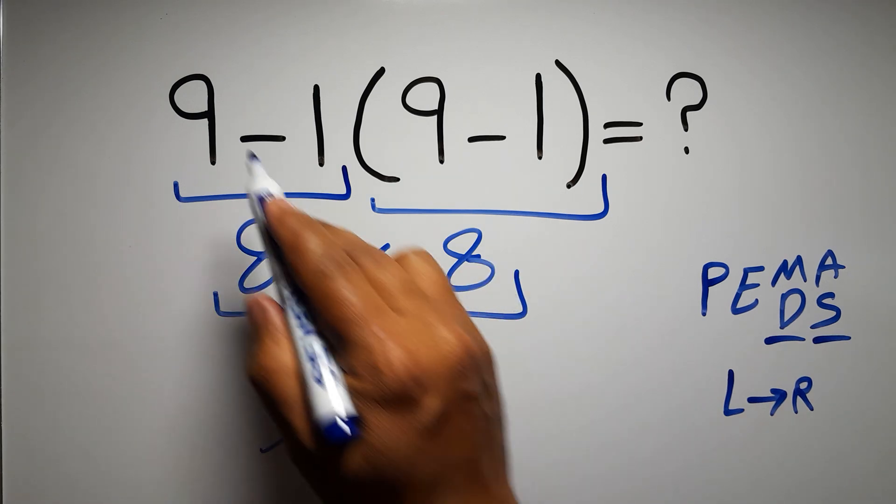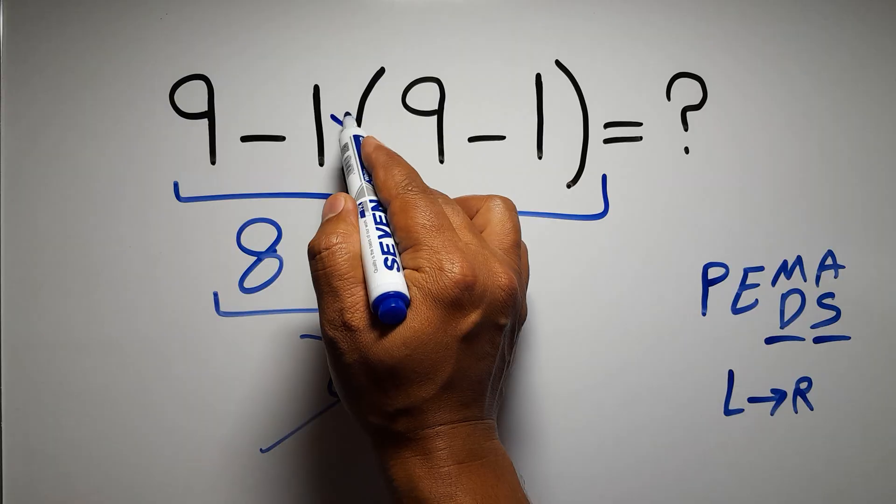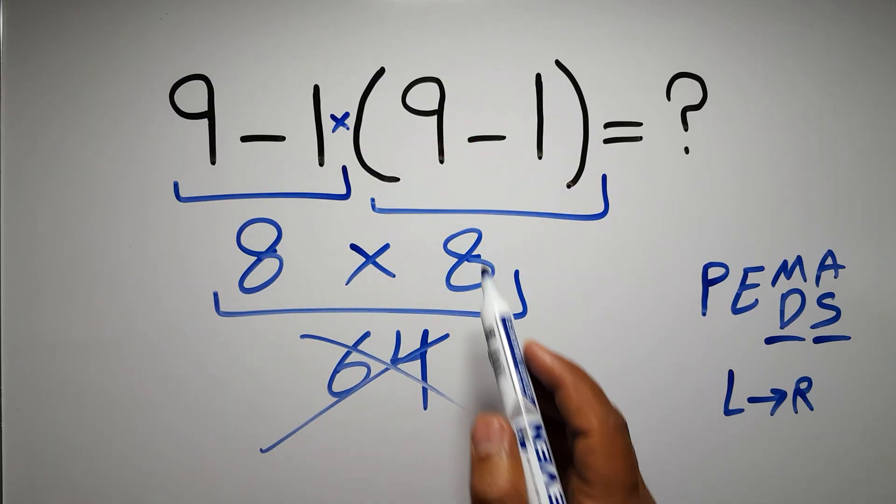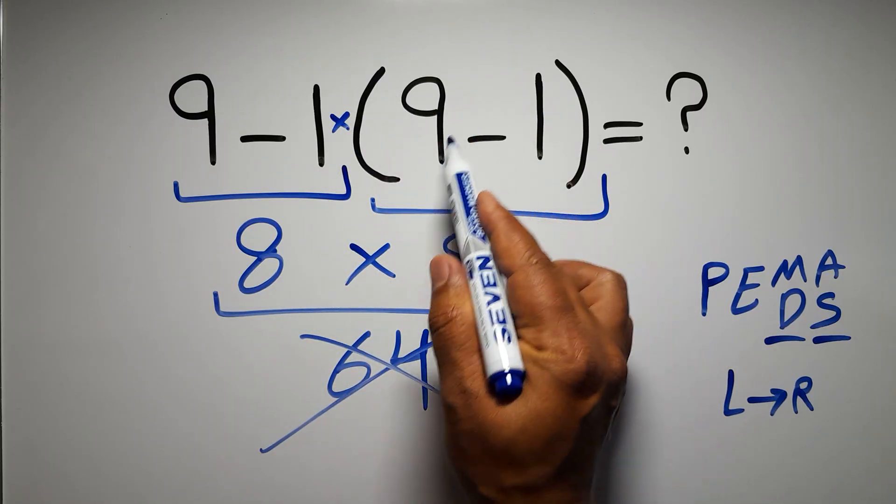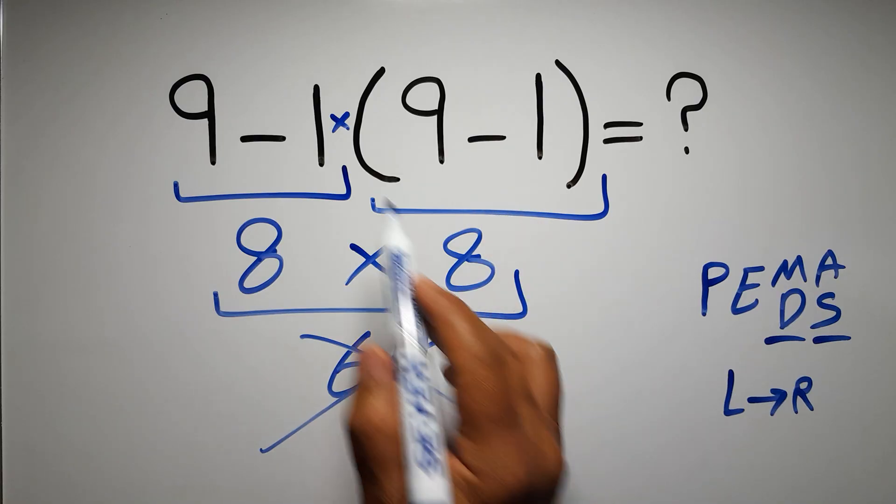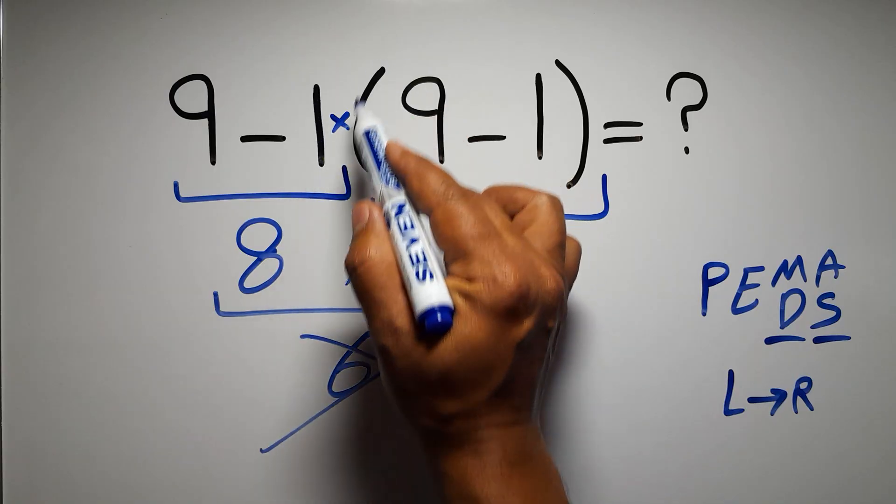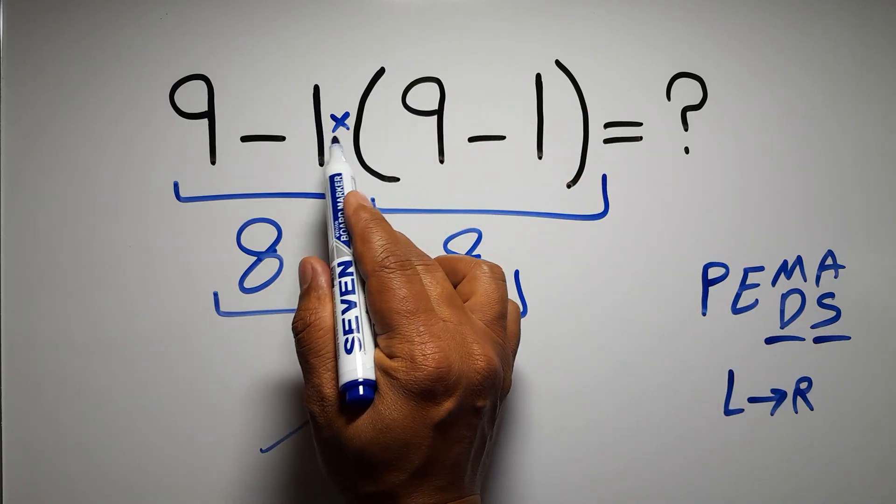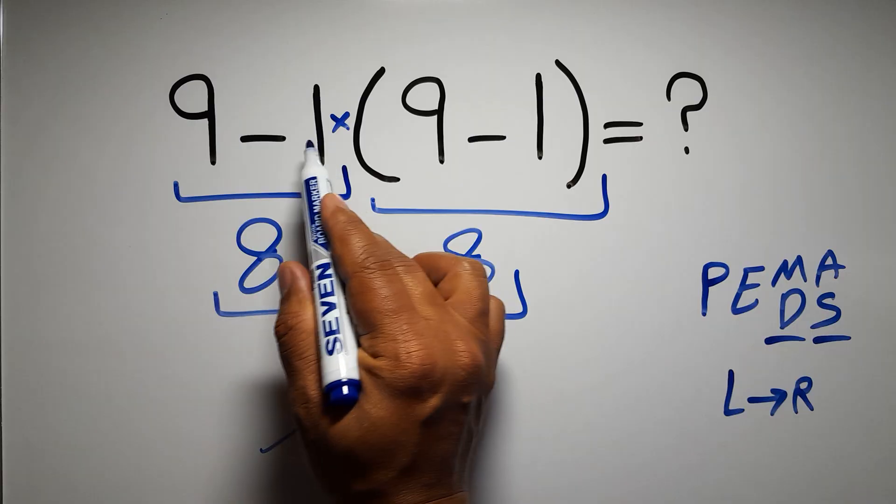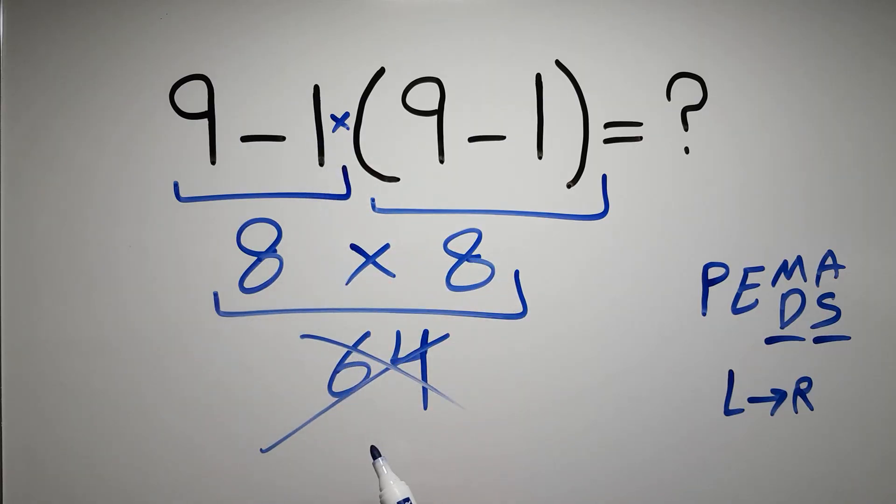In this expression, we have one subtraction, one multiplication, and one parentheses. Inside these parentheses, we have one subtraction. Here we have a multiplication, because in mathematics, when a number is placed next to parentheses, it means multiplication, and we usually don't write the multiplication sign for brevity.